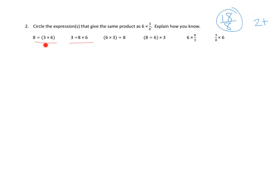So I want to circle the expressions that give the same product as this and explain how I know. So let's take a look at this one. 8 divided by 3 times 6. Well, I know that we have to evaluate that parentheses first. So this is 8 divided by 18. And 8 divided by 18 is just 8 eighteenths, right?